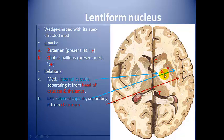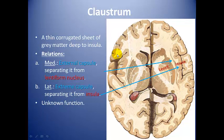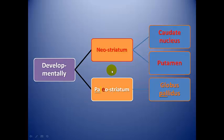Regarding the relations of the lentiform: the globus pallidus is separated from the thalamus and caudate by the internal capsule, while the putamen is separated from the claustrum by the external capsule. Between the claustrum and the insula lies the extreme capsule. The claustrum's medial relation is the external capsule separating it from the lentiform, particularly the putamen. Laterally, the extreme capsule separates it from the insula. The claustrum is of unknown function.